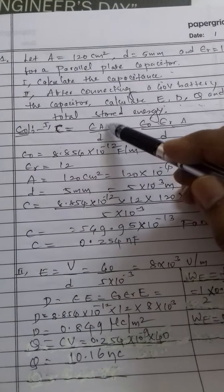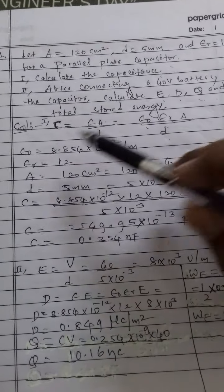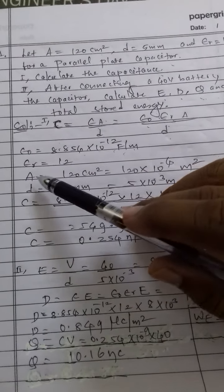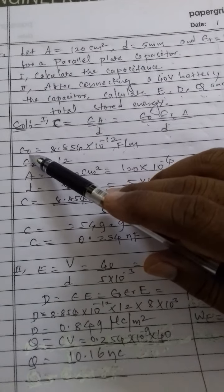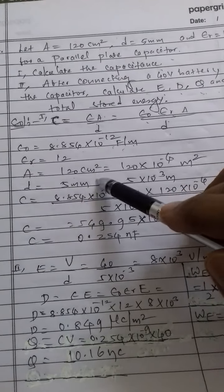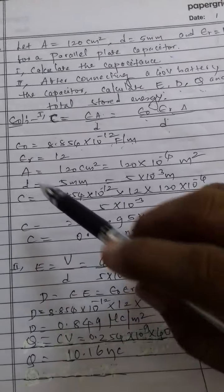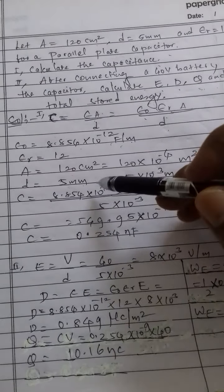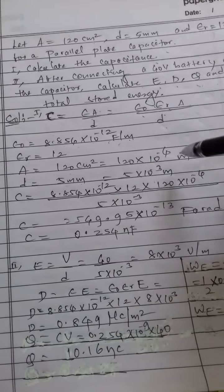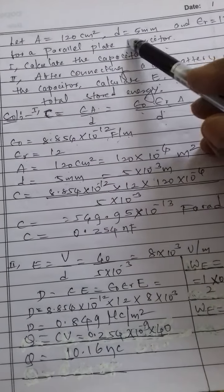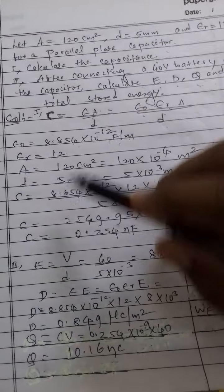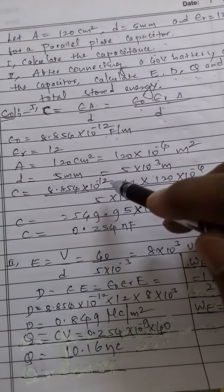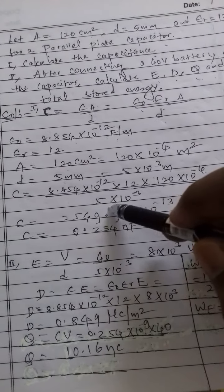The capacitance C equals epsilon times A over d, where epsilon equals epsilon_0 times epsilon_r. Epsilon_0 is 8.854 × 10⁻¹² F/m and epsilon_r equals 12. Converting units: area A equals 120 cm² equals 120 × 10⁻⁴ m², and distance d equals 5 mm equals 5 × 10⁻³ m. So C equals 8.854 × 10⁻¹² × 12 × 120 × 10⁻⁴ divided by 5 × 10⁻³.